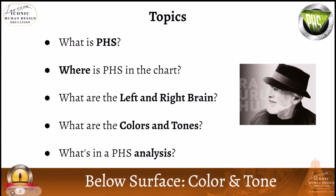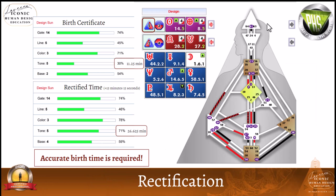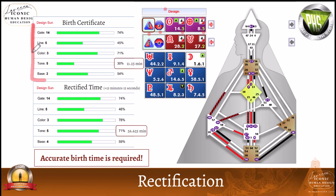We're going to dive below the surface of the line values and go into color and tone. When you look at this body graph on the left-hand side — the design side — you're going to find that there is a line value, and then a color, and then a tone, and then a base. In your report, you'll see the line value, color, tone, and base listed right there under your design sun and under your design earth.